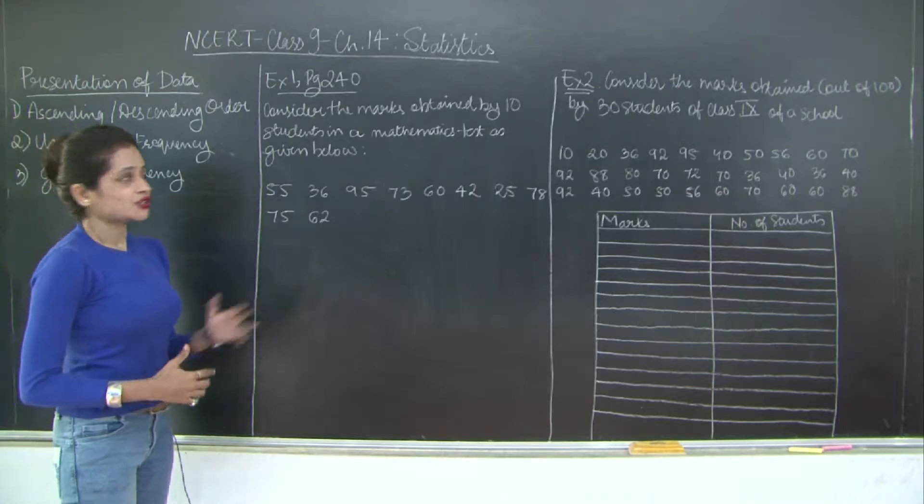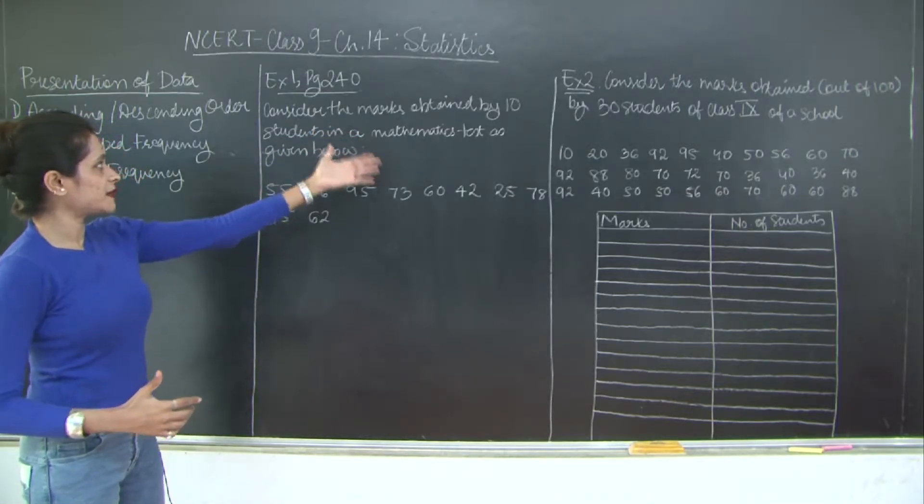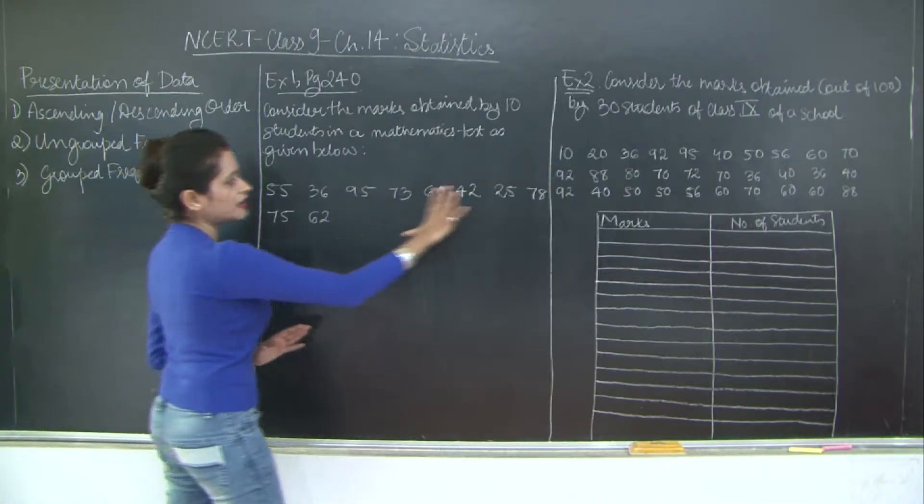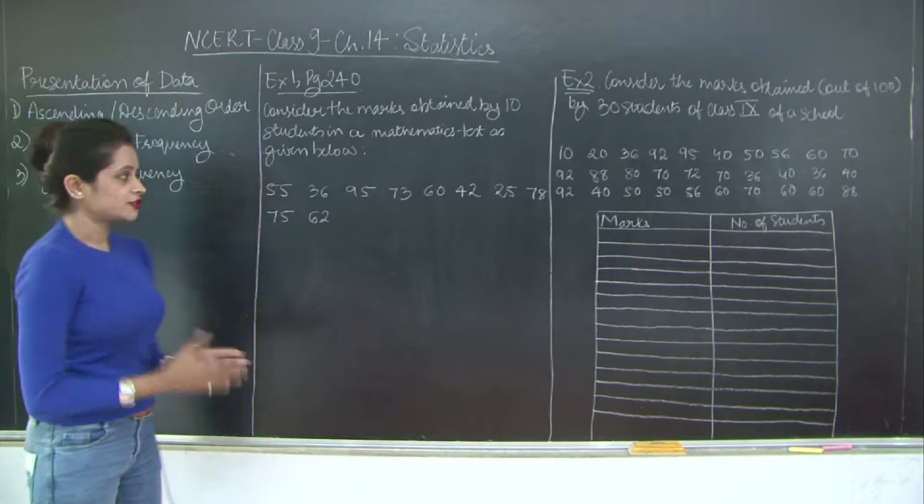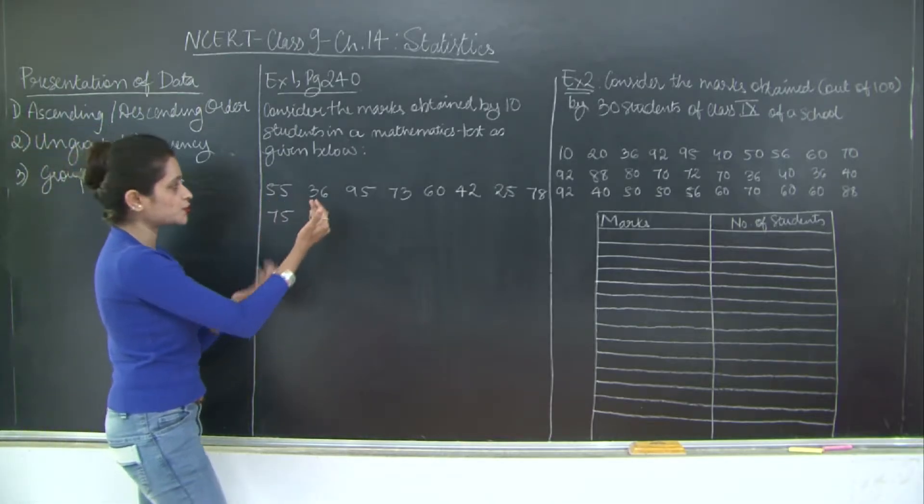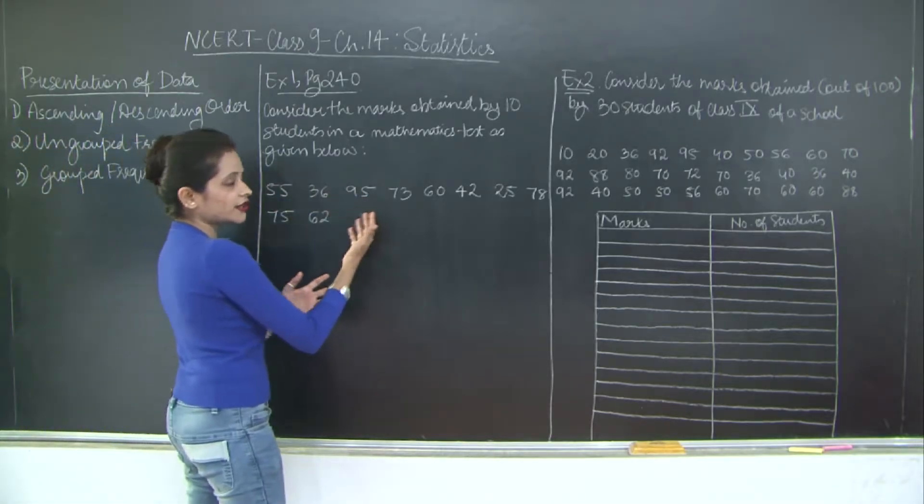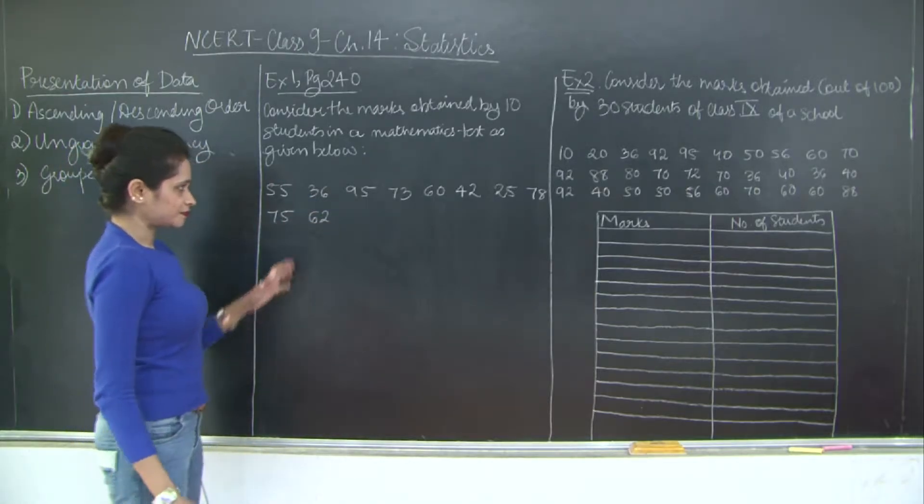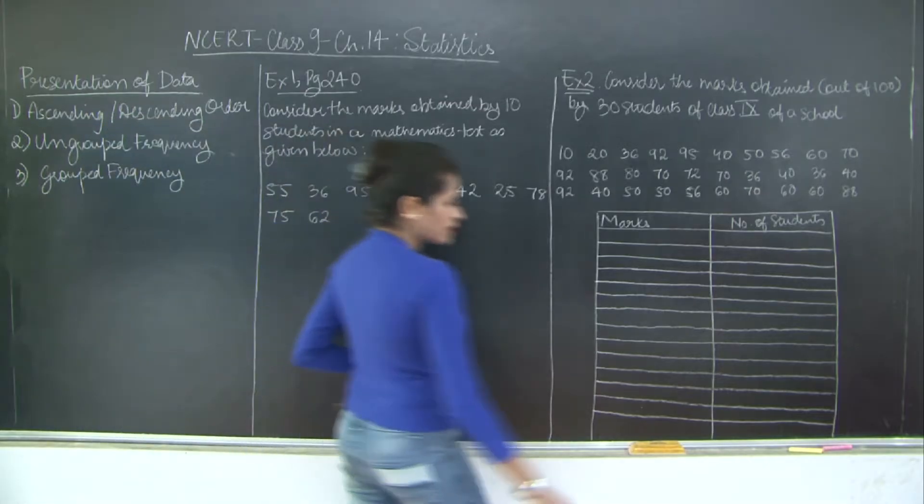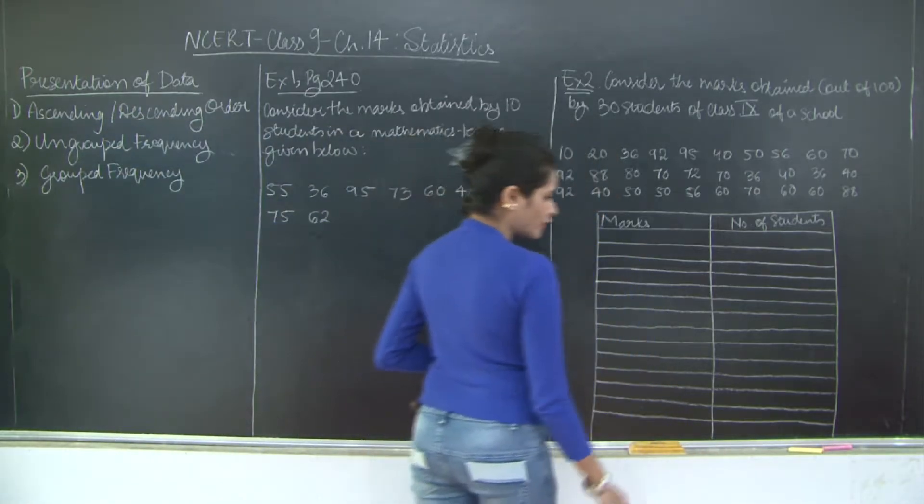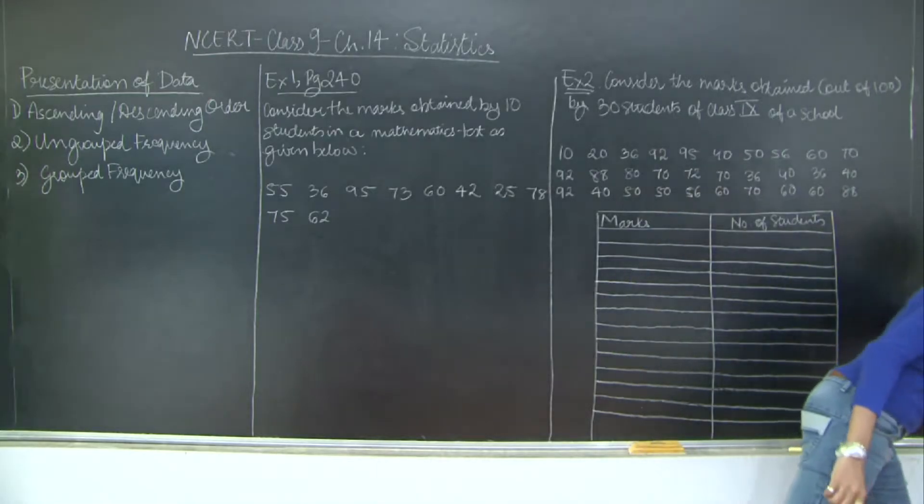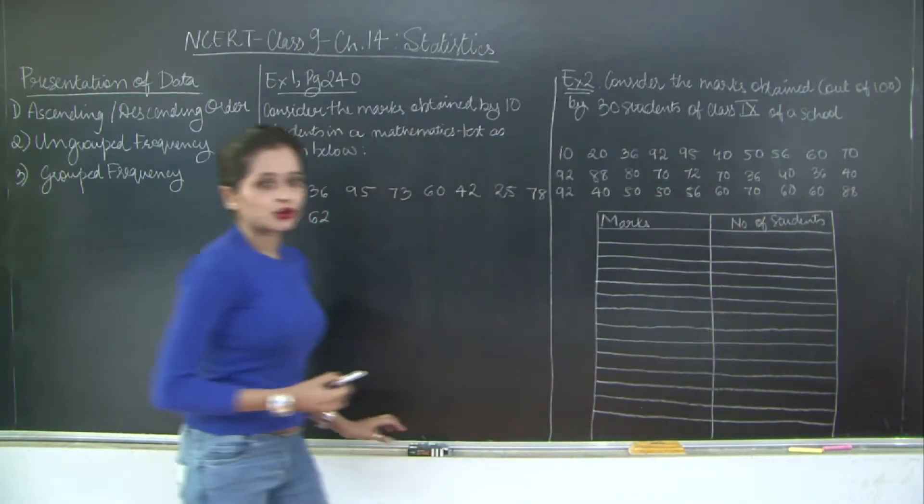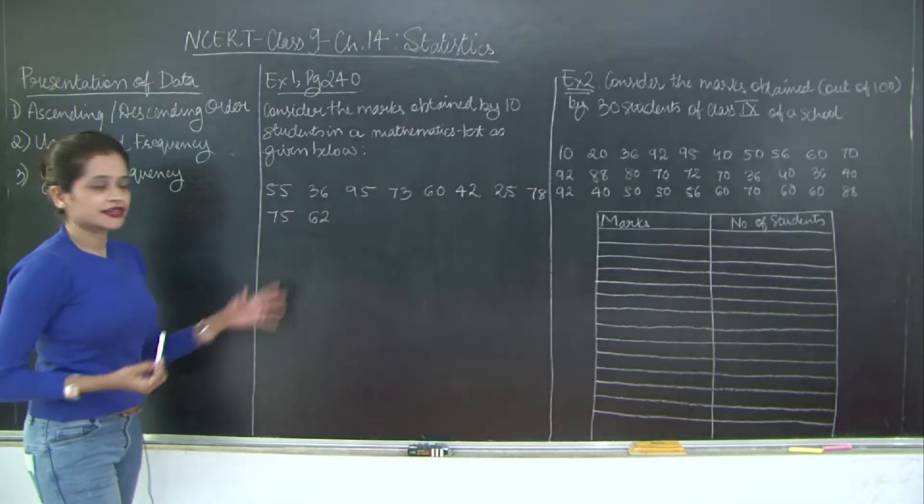Consider the marks obtained by 10 students in a mathematics test as given below. Here are the marks that 10 students secured. Student 1 got 55, student 2 got 36, the other student got 95 and so on until student 10 got 62 marks. Now all this data is in the form of raw format.